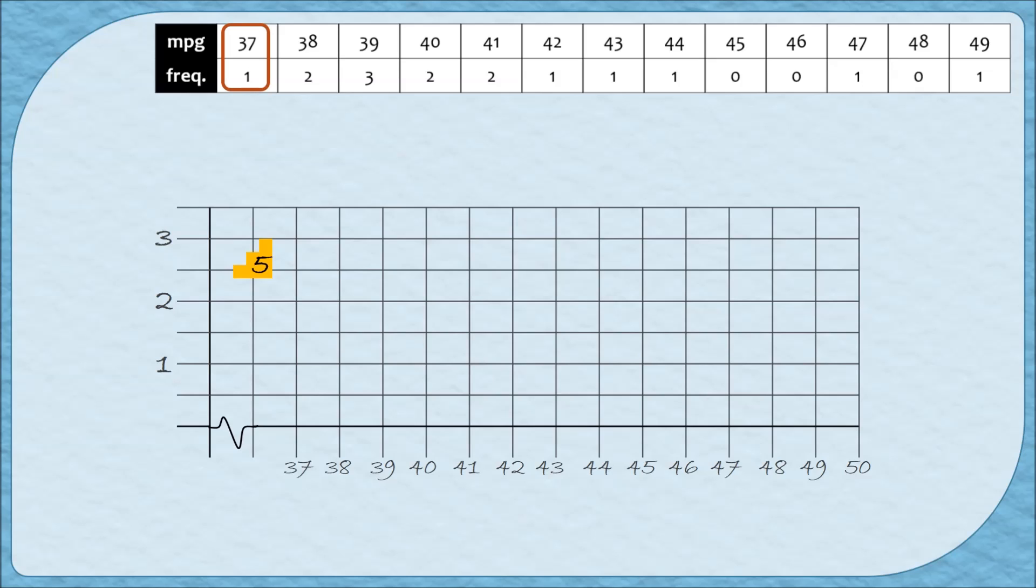We're still going to draw the bar so that it has a height of one, but instead of the bar starting at 37, I want the bar to be centered at the 37. So watch carefully how I draw the top of the bar. So notice that this line is kind of hovering in the middle over the line for 37. Then I'm going to draw the lines down, connecting down on the left and the right.